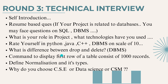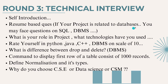Database management system questions include: the command to display the first row of a table consisting of 1000 records, and define normalization and its types. Also, why did you choose CSE, data science, or CSM? If you are related to a particular branch like computer science, data science, or machine learning, they might ask why you chose that branch.